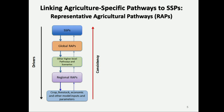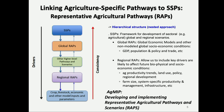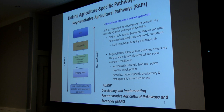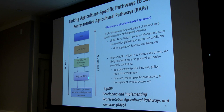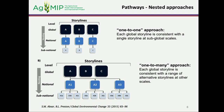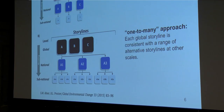You've seen this figure on how to link specific pathways to SSPs. We have the higher-level pathways — SSPs, global RAPs, or other intermediate pathways — and regional RAPs that fit into the models. Drivers flow from top to bottom, but consistency across drivers is important, and it should be a nested approach. There are different types: the one-to-one approach where each global storyline is consistent with a single storyline at sub-global scales, or the one-to-many approach where each global storyline is consistent with a range of alternative storylines at other scales.